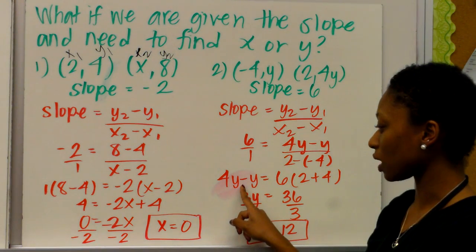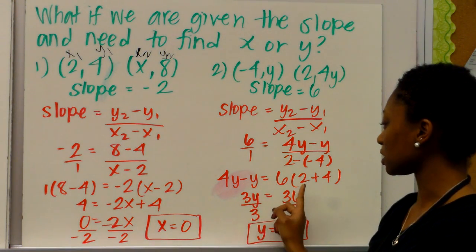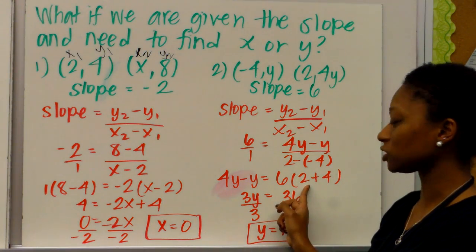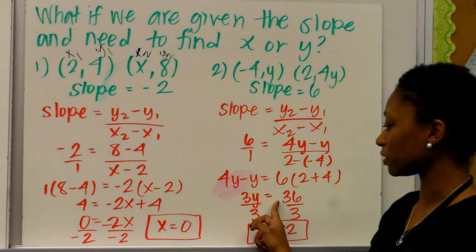So, again, we cross multiply 4y minus y on this side, and then 6 times 2. Remember, 2 minus a negative 4 is just 2 plus 4. So 6 times 2 plus 4, which is 6 times 6, to give us 36.